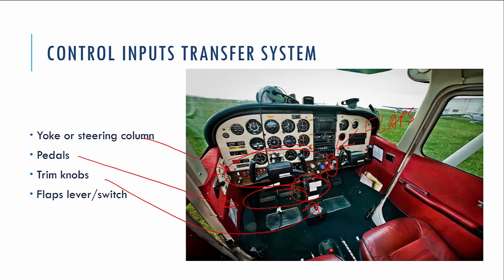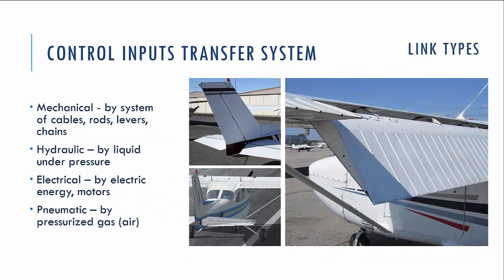We have some ways to do this. The first and easiest is the mechanical system — the most basic system containing cables, rods, levers, chains, and pulleys. Everything is mechanical. We can also have a hydraulic way of transferring inputs, using pressurized oil. Next is the electrical way, using electrical power and electric motor actuators. We could also use a pneumatic system, which uses pressurized gas.